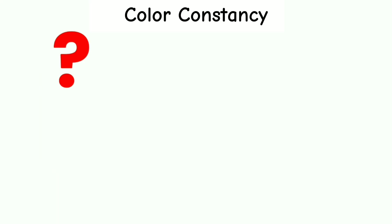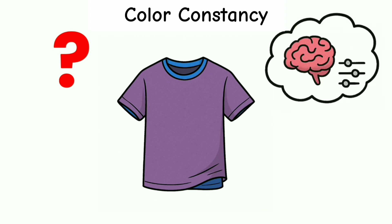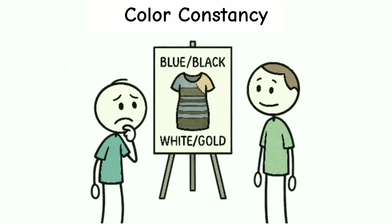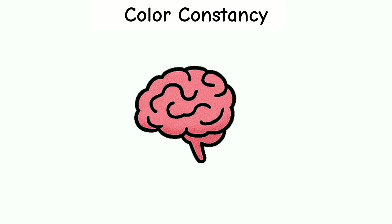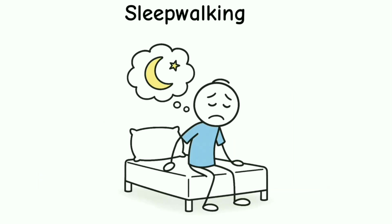Color constancy: ever seen a shirt in your room that looks blue, but outside it looks purple? Your brain's trying to adjust for lighting and sometimes it guesses wrong. This is what caused that viral dress debate—blue black versus white gold. Your eyes weren't broken, your brain was just making assumptions. Sleepwalking.